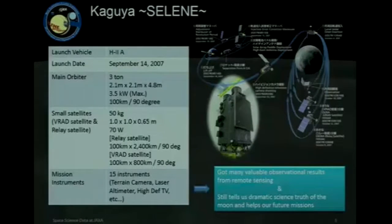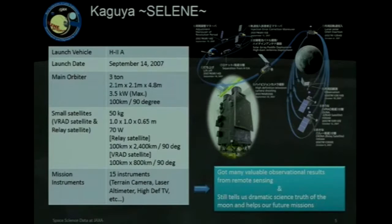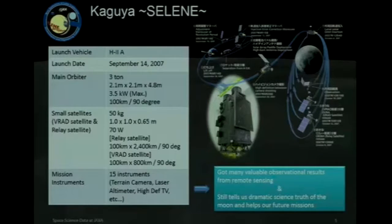We developed educational materials with the Kaguya data. Kaguya is a remote sensing orbital satellite to observe the moon, which was launched in 2007, with 15 instruments including a terrain camera, multi-band imager camera, and laser altimeter.